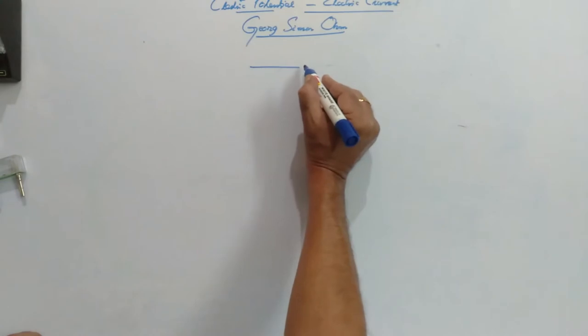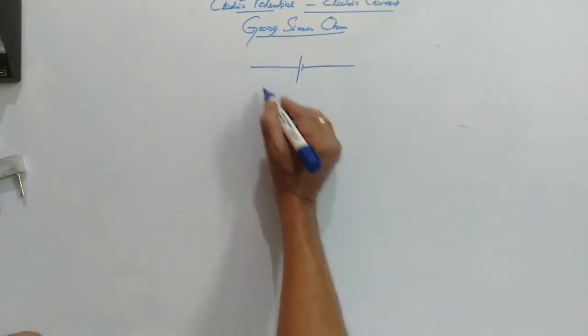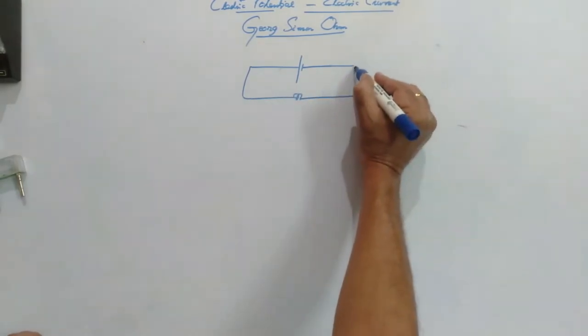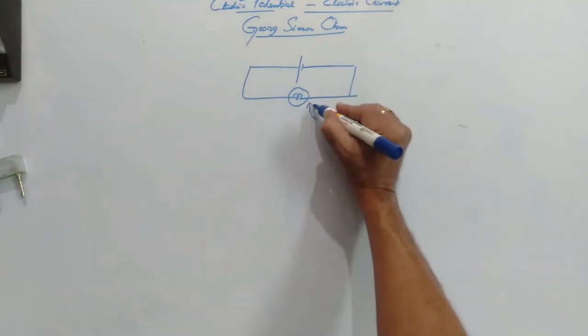For that, it is very simple. If you take one cell and a bulb is connected across it and note down the brightness of the bulb.